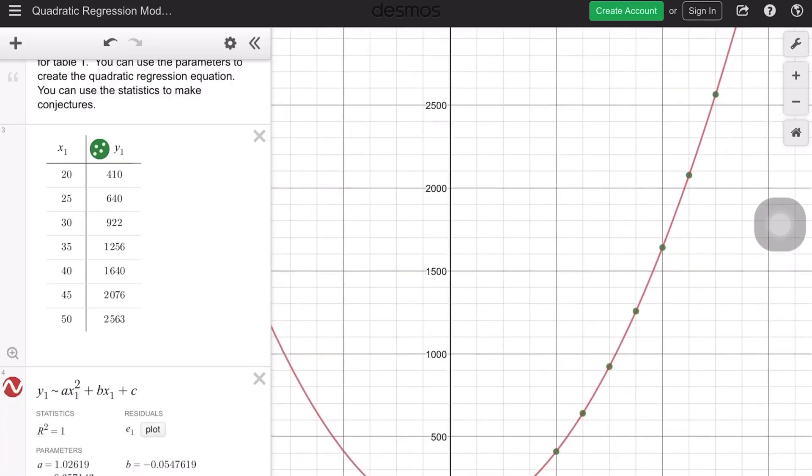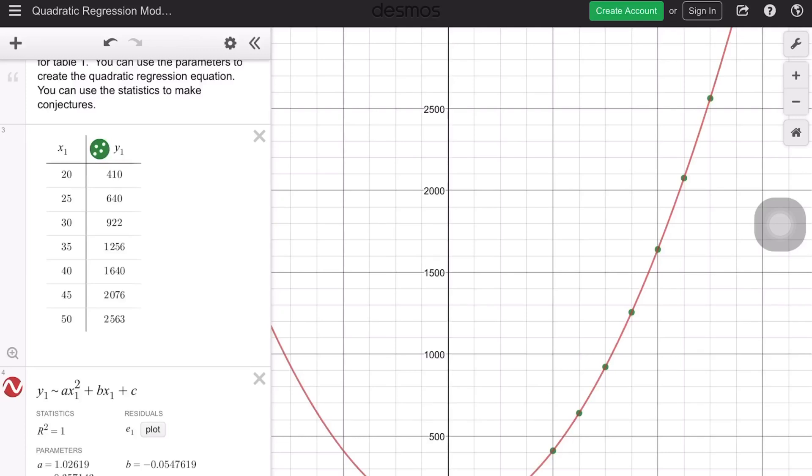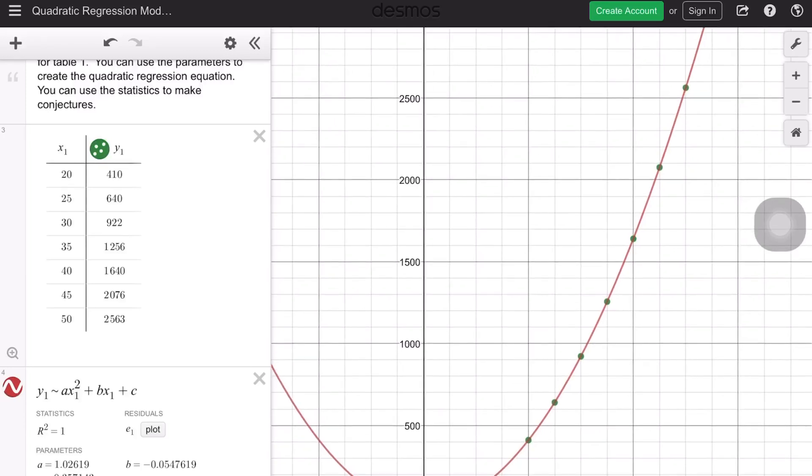And there you go, so you can see that this graph kind of pretty closely fits at each point here. So you can see that point there, there, there. These are all the points that we input using the regression model.